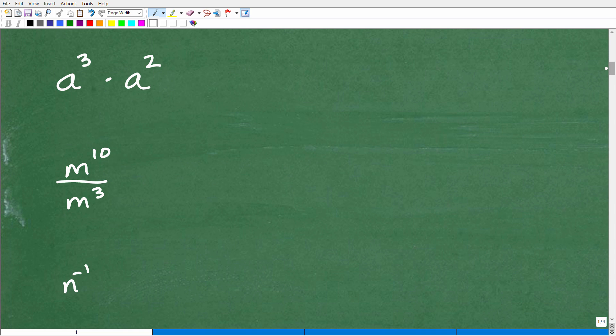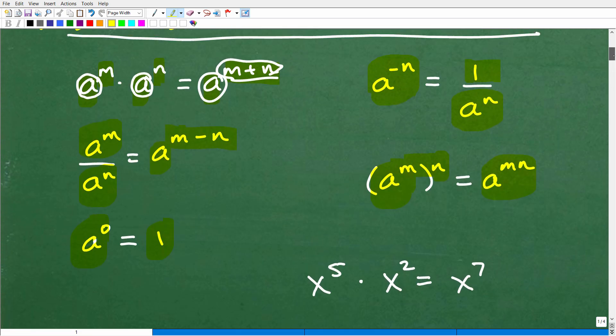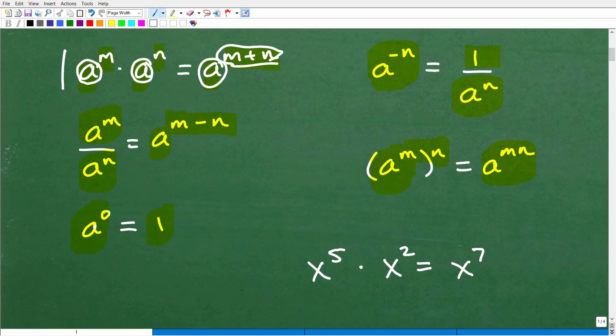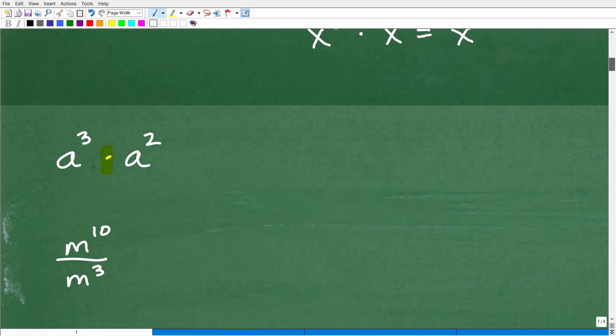All right. So let's take a look at our first problem. Now, we're looking at this problem. You're saying, OK, what is the situation? Well, we have powers, but we're multiplying powers. So we're thinking to ourselves, which rule applies here? And it would be this rule, right? Multiplication of powers. So if the bases are the same, we're going to add the exponents.